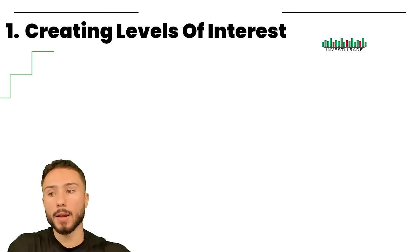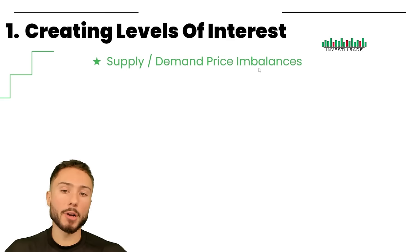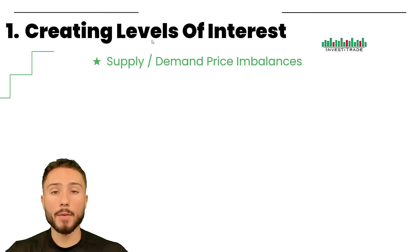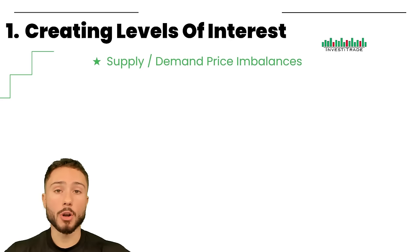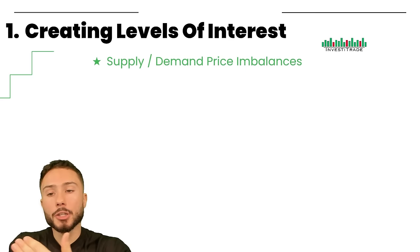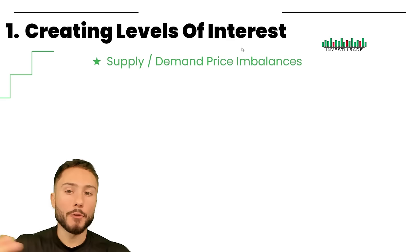There are many different ways that I create levels of interest. Some I view the same, some I view very different, and the different levels I trade differently around. The first one is supply and demand price imbalances — this is essentially the core structure to my trading. I relate my trading to the pit trading days before electronic trading, where it was an open outcry system with numerous traders in a large pit buying and selling.